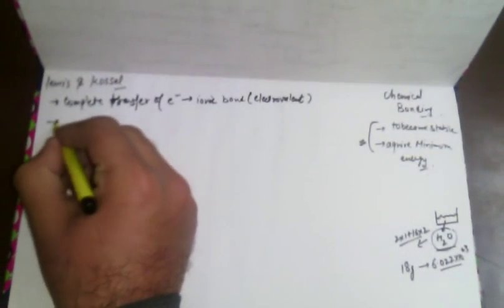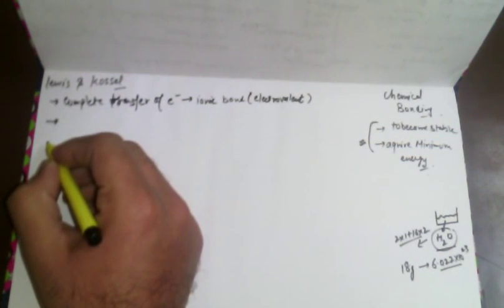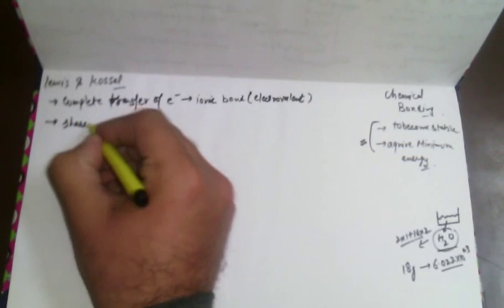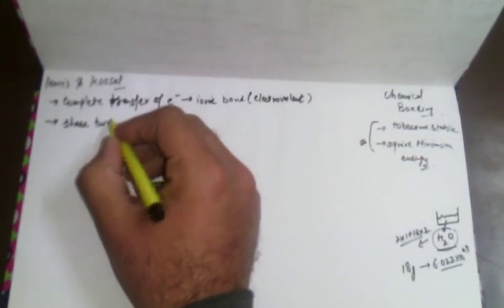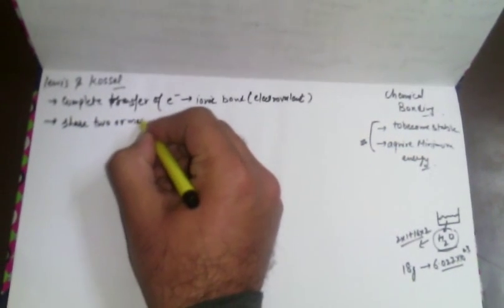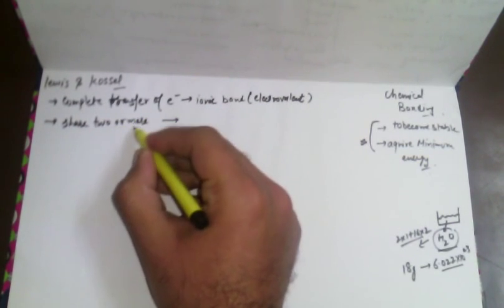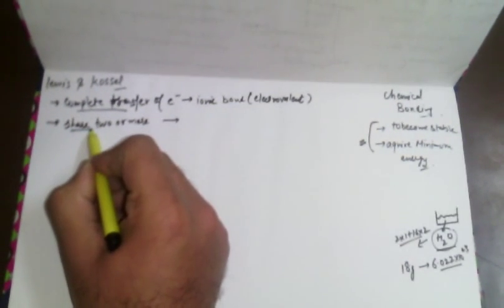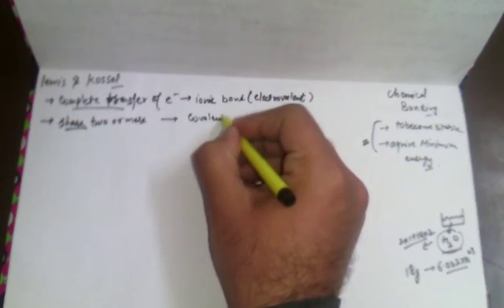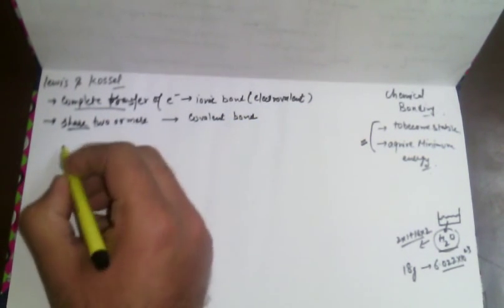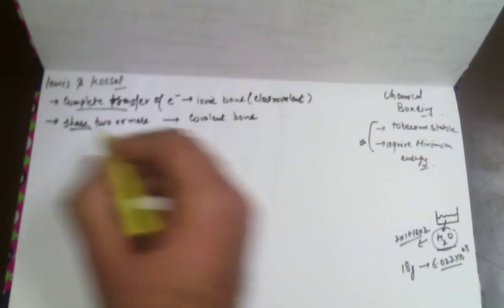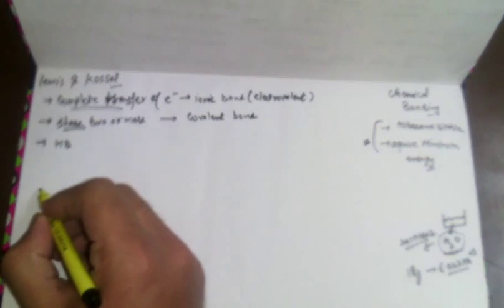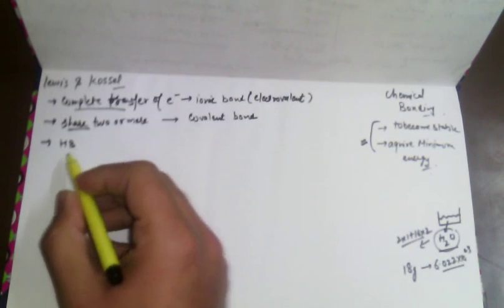The second type is when two atoms combine by sharing one or more electrons — we call this a covalent bond. When there is complete transfer, it is called an electrovalent bond; when there is sharing between two atoms, that bond is called a covalent bond. The overall purpose of all kinds of bonding is to become stable and acquire minimum energy — you must learn these points to understand this chapter.